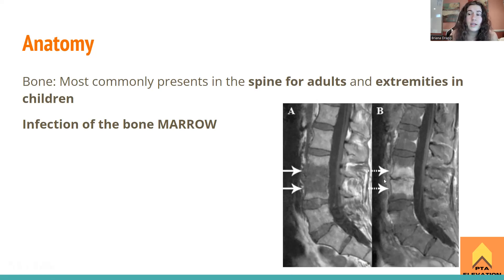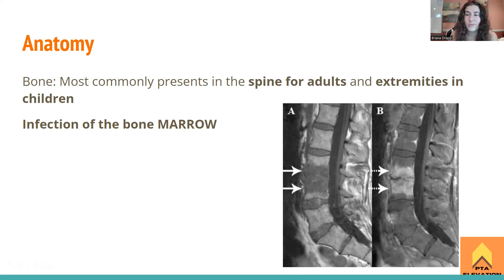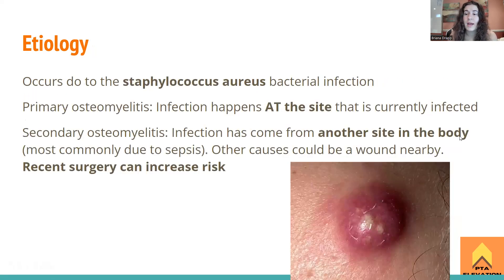In children, osteomyelitis is going to present in the extremities — so the femur, humerus, ulna, that kind of stuff. That's mainly where it shows up. But with the boards, they're mostly going to ask about an adult with osteomyelitis, which most commonly presents in the spine — lumbar vertebrae.